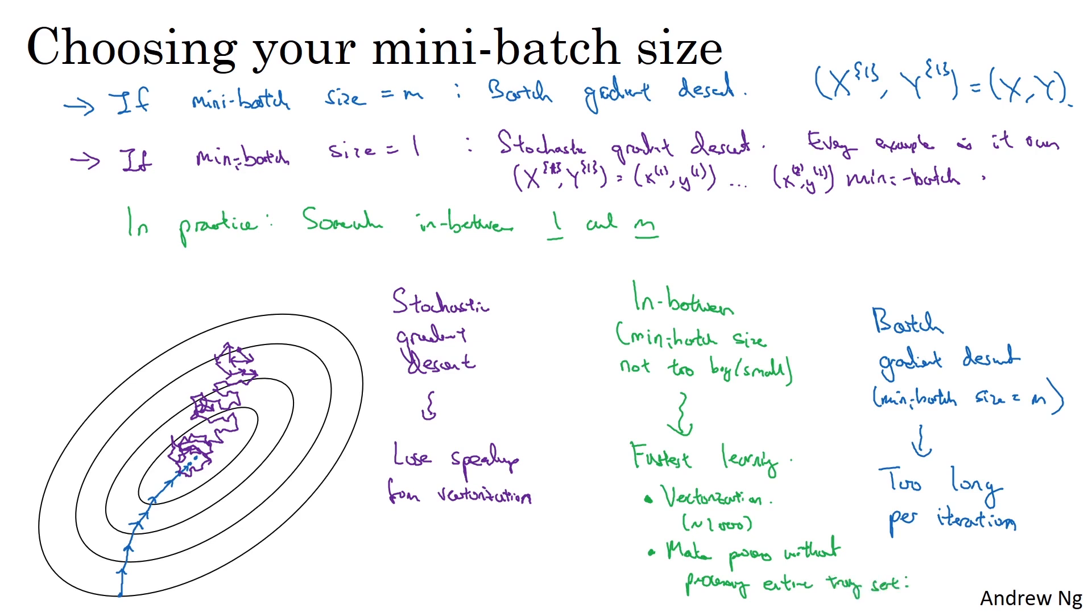So again, using the numbers from the previous video, each epoch or each pass through your training set allows you to take 5,000 gradient descent steps. So with mini-batch descent, if you start here, maybe one iteration does this, two iterations, three, four, and it's not guaranteed to always head toward the minimum, but it tends to head more consistently in the direction of the minimum than stochastic gradient descent. And it doesn't always exactly converge, you'll oscillate in a very small region. If that's an issue, you can always reduce the learning rate slowly. We'll talk more about learning rate decay in a later video.